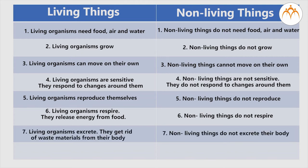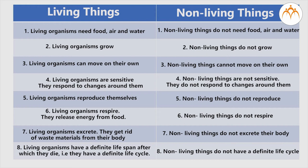Living organisms excrete. They get rid of waste materials from their body. Non-living things do not excrete. Living organisms have a definite life span after which they die. That is, they have a definite life cycle. Non-living things do not have definite life cycle.